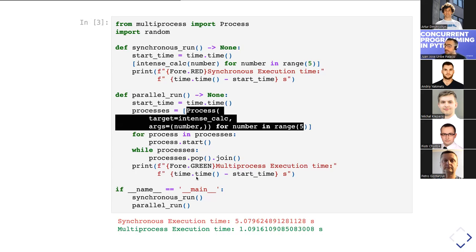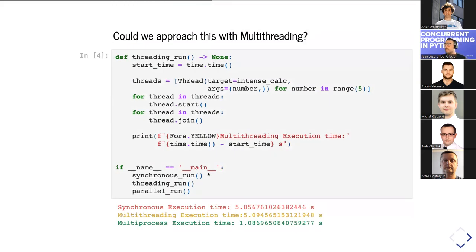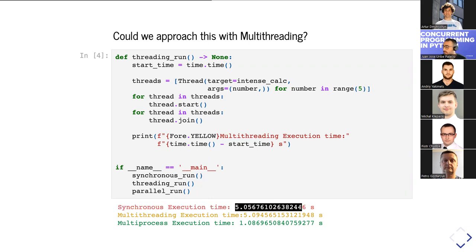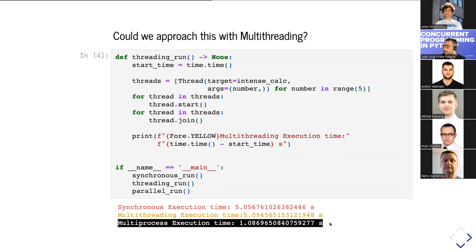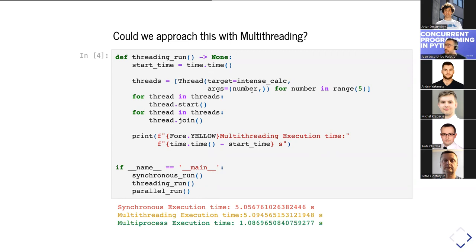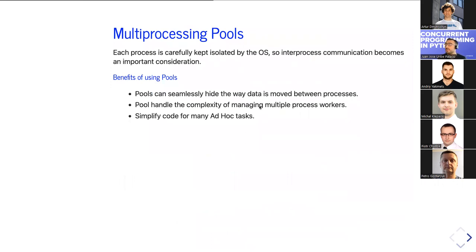You might ask: could we solve this with multi-threading? Let's try. We use the same intense calculation function but with the threading API — same methods for the objects. The result: synchronous execution took five seconds, multi-threading took slightly more due to spawning overhead, and actually took longer than synchronous for CPU-bound work. This confirms that for programs constantly locking the GIL with intense calculations, multi-processing is the best approach.